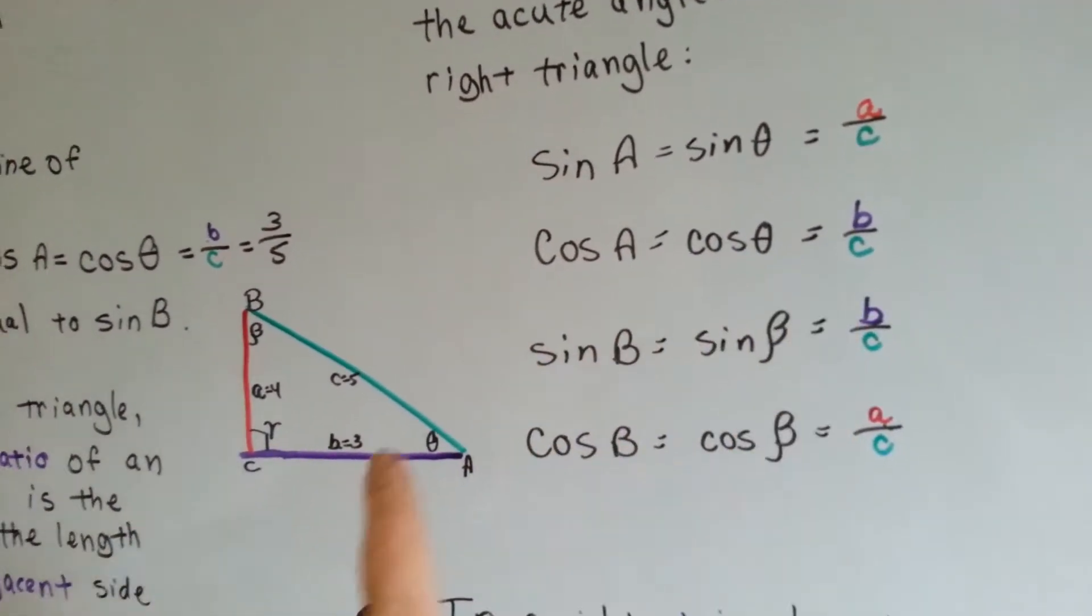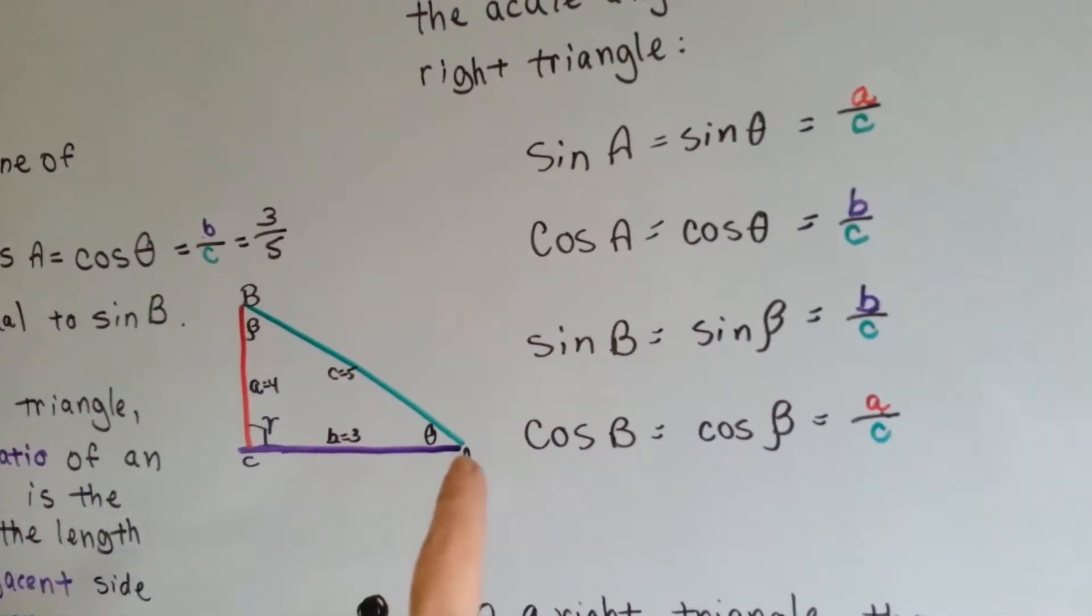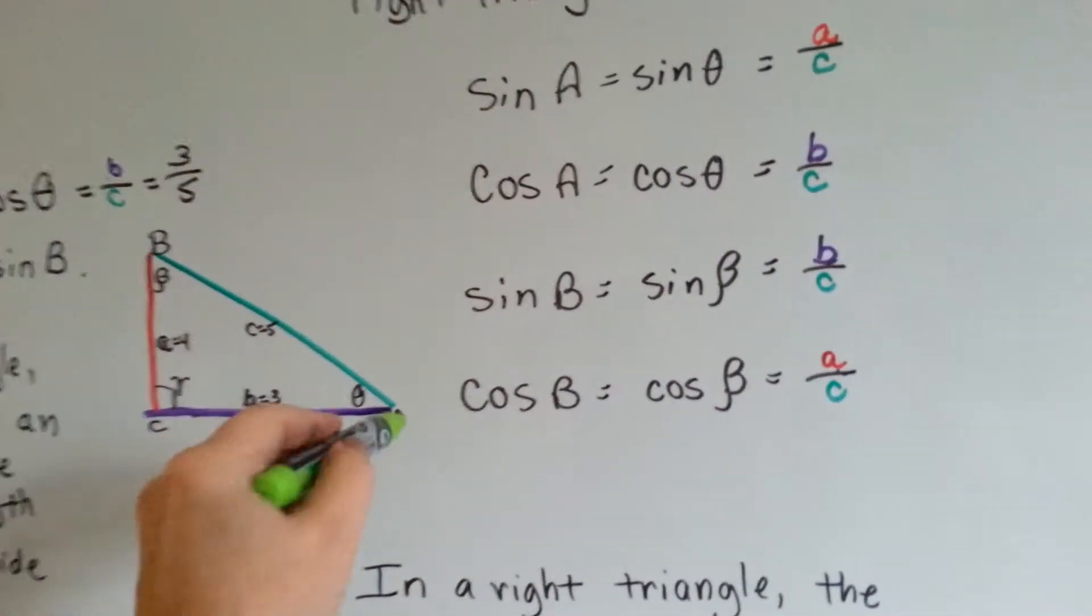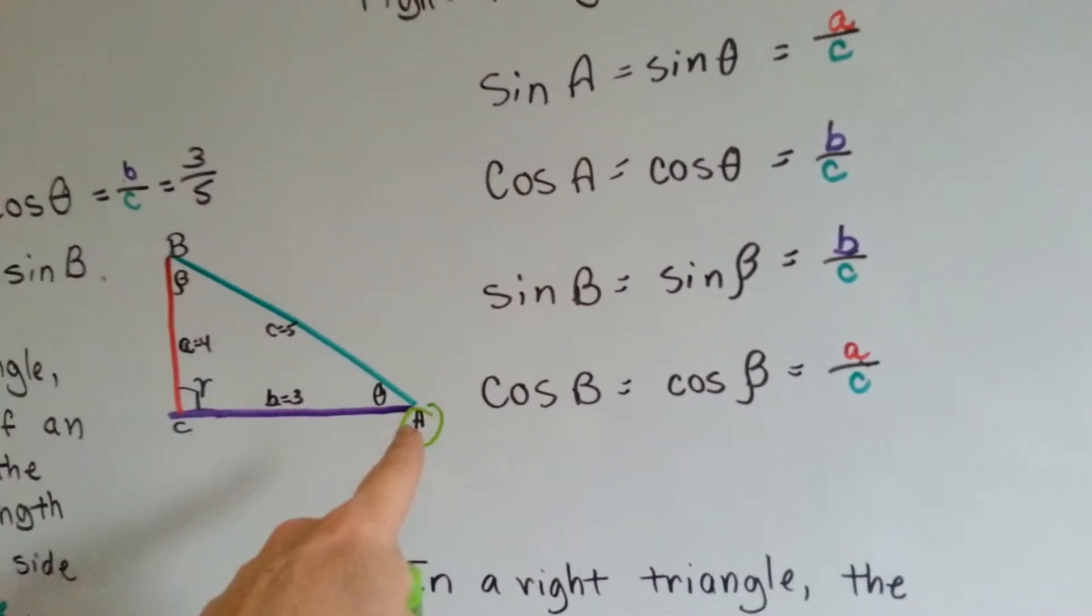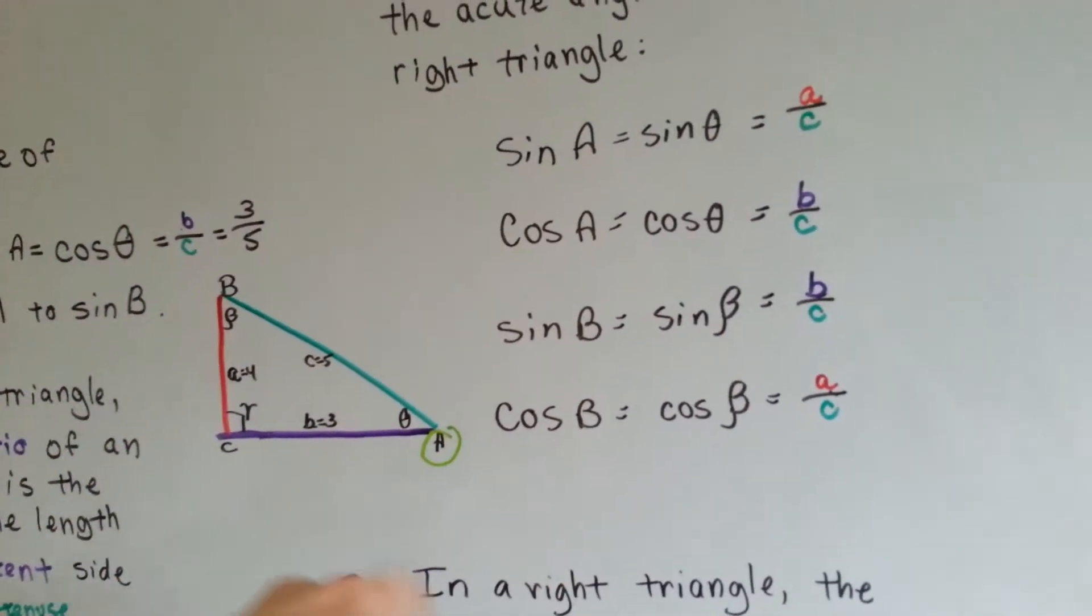Cosine A is B over C, the purple over the green. Now, this is for angle A. This is what we're talking about, for angle A. So, that's the opposite for A, that's the adjacent for A.